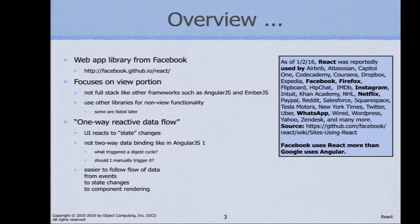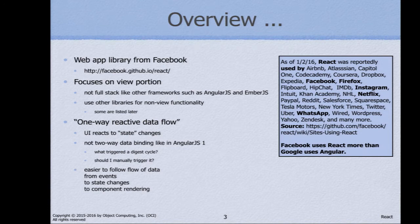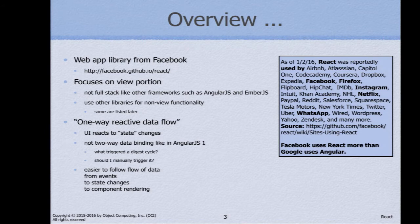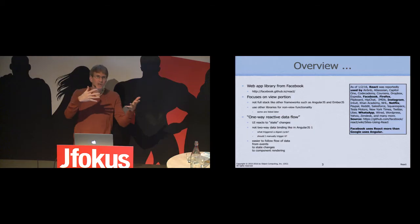React gives you a one-way reactive data flow. Your UI reacts to changes in the state — state is just data describing what's happening in your app. You don't have two-way data binding as is popular in Angular 1. With two-way data binding, you end up asking yourself things like what triggered this digest cycle, or should I manually trigger it. All those kinds of thoughts go away when you get rid of two-way data binding. You think about components, events, state changes, and UI re-renders. That really simplifies your thought process.